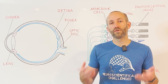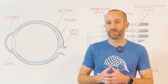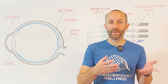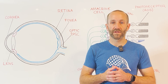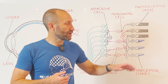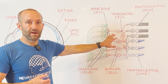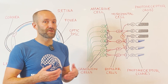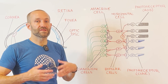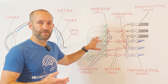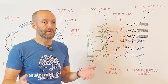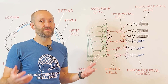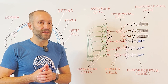The retina is a neural structure — it's actually considered part of the central nervous system. Its main function is to detect light and use that light to produce electrical and chemical signals that the rest of the nervous system can understand. Although there are over a thousand different types of neurons in the nervous system, there are only five basic types in the retina, situated in distinct layers. So even though there are hundreds of millions of neurons in the retina, it's relatively simple anatomically, and this has helped us develop a better understanding of vision than of any other sensory system.